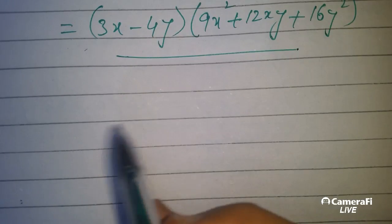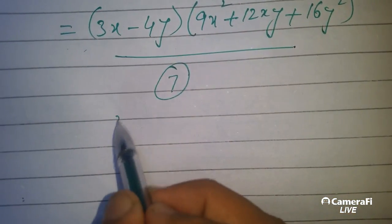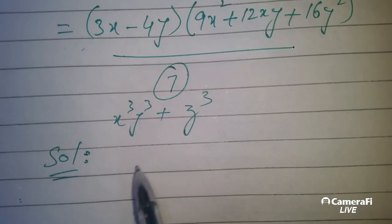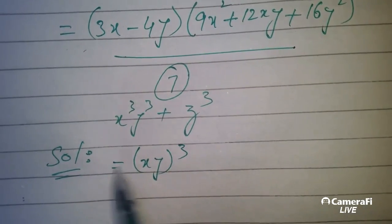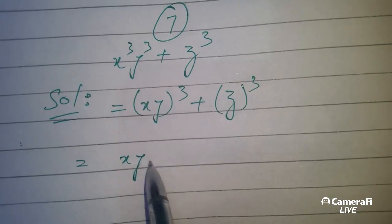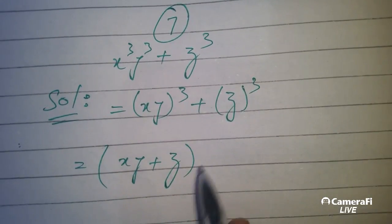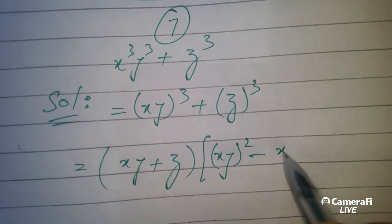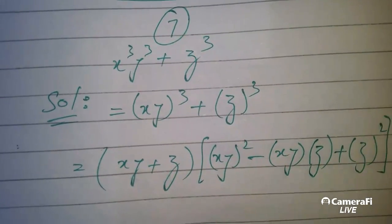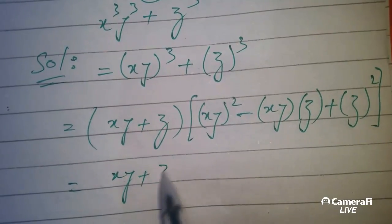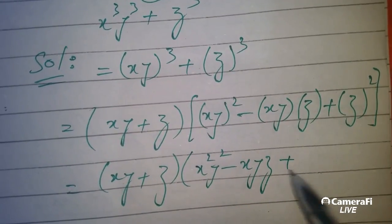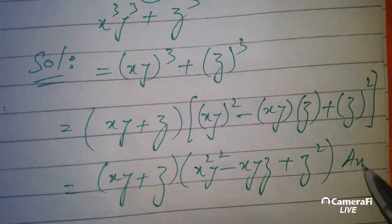Next question, question number 7: x cubed y cubed plus z cubed. We can write this as xy cubed plus z cubed, and now apply the cubic formula. First term plus second term, times square of the first term minus first term into second term plus square of the second term: xy plus z, times x squared y squared minus xyz plus z squared. The question is over.